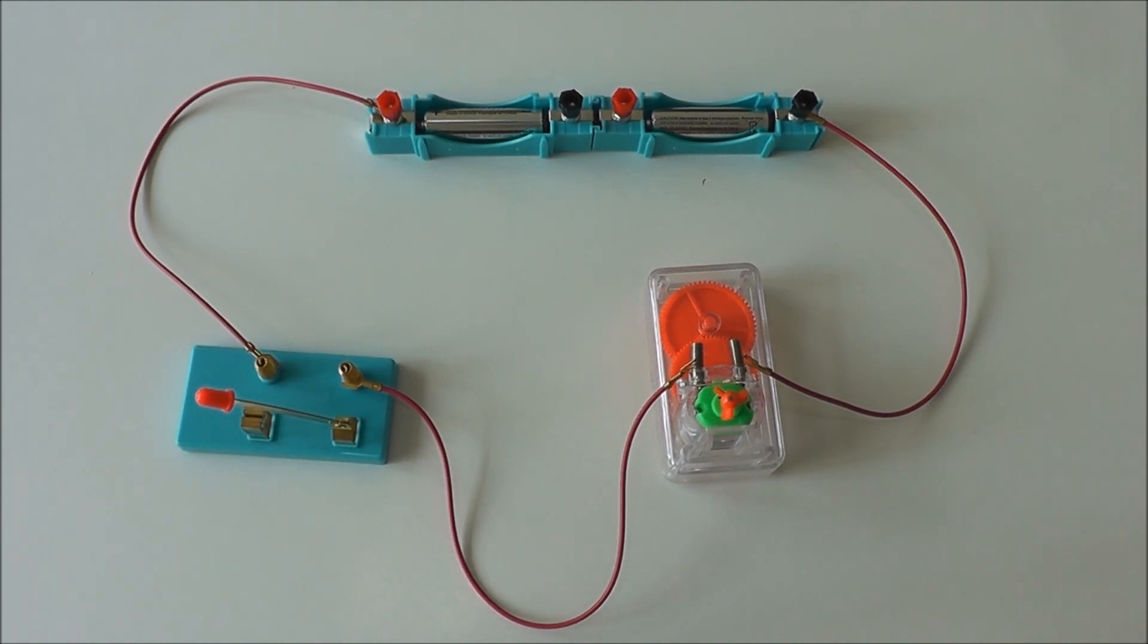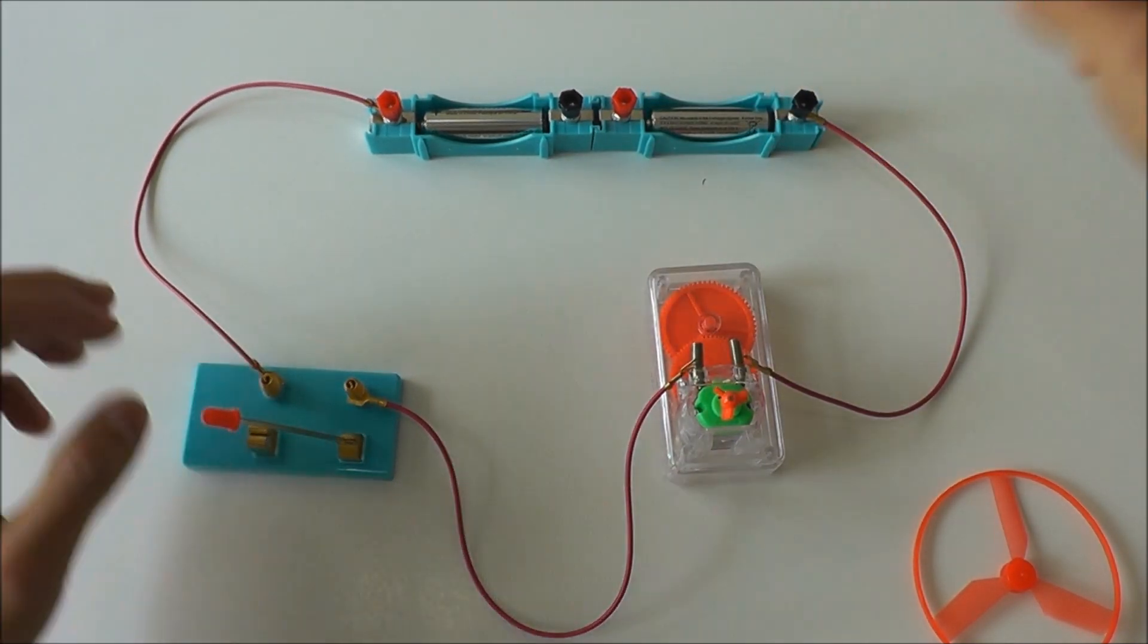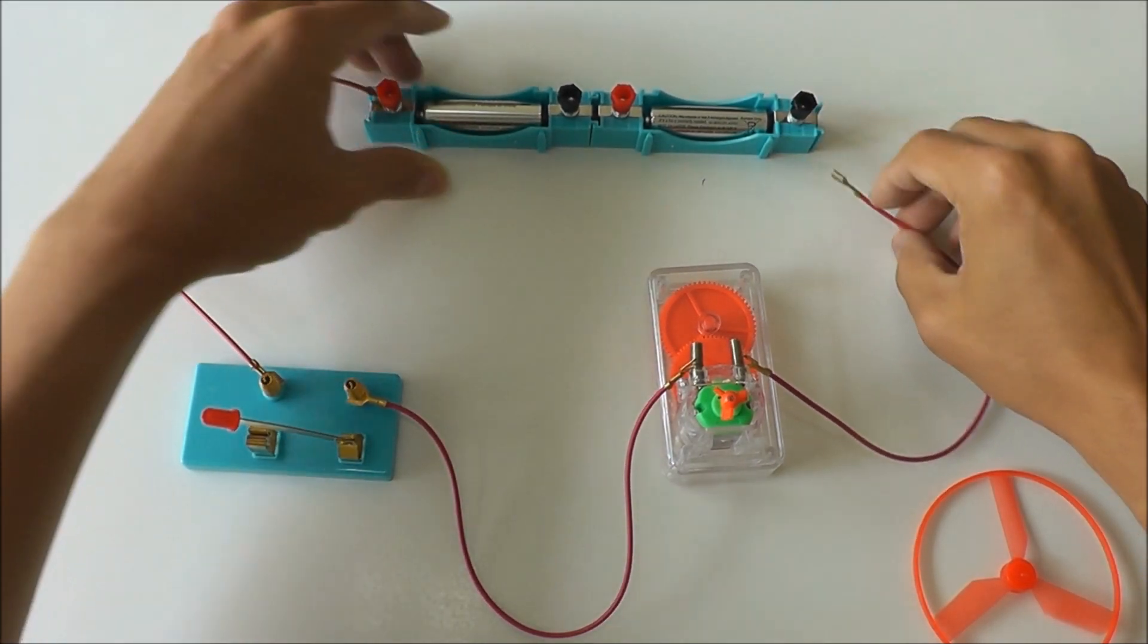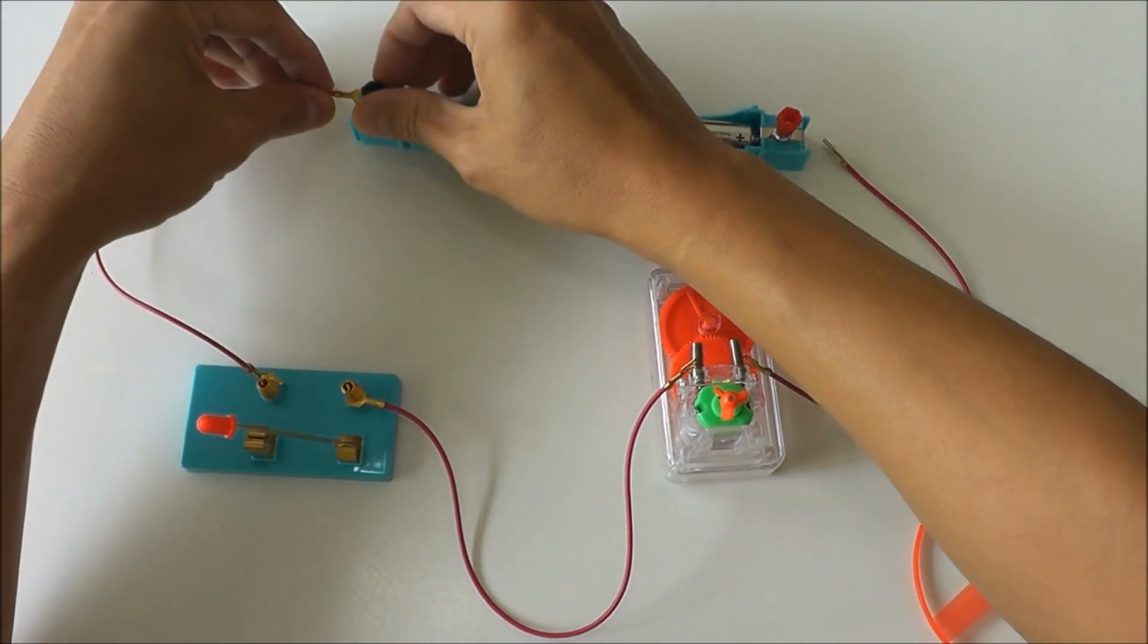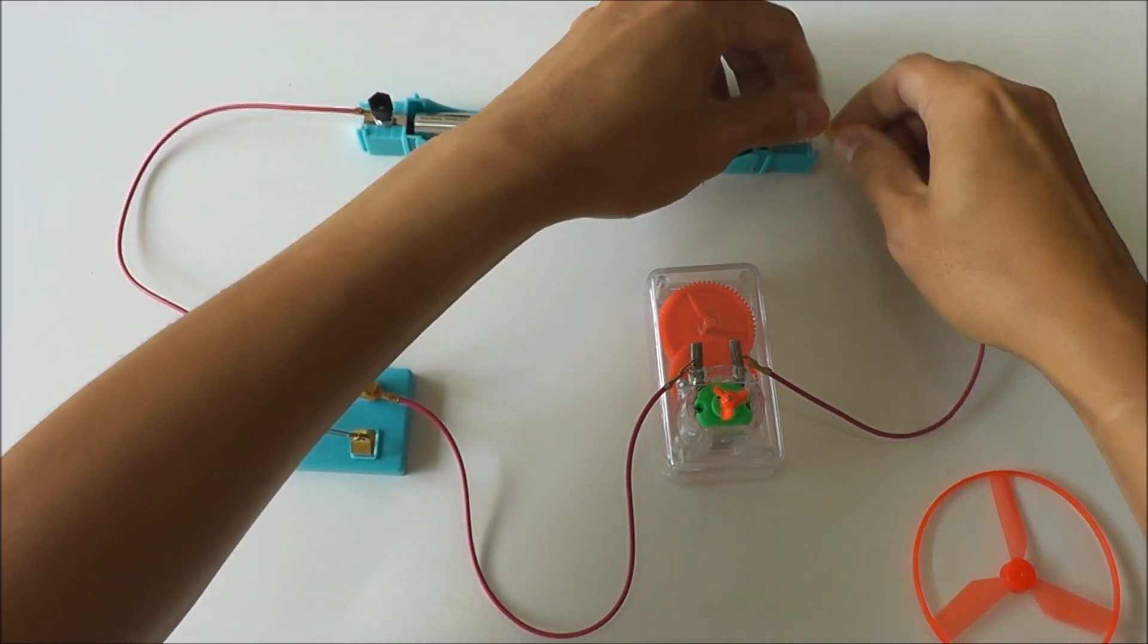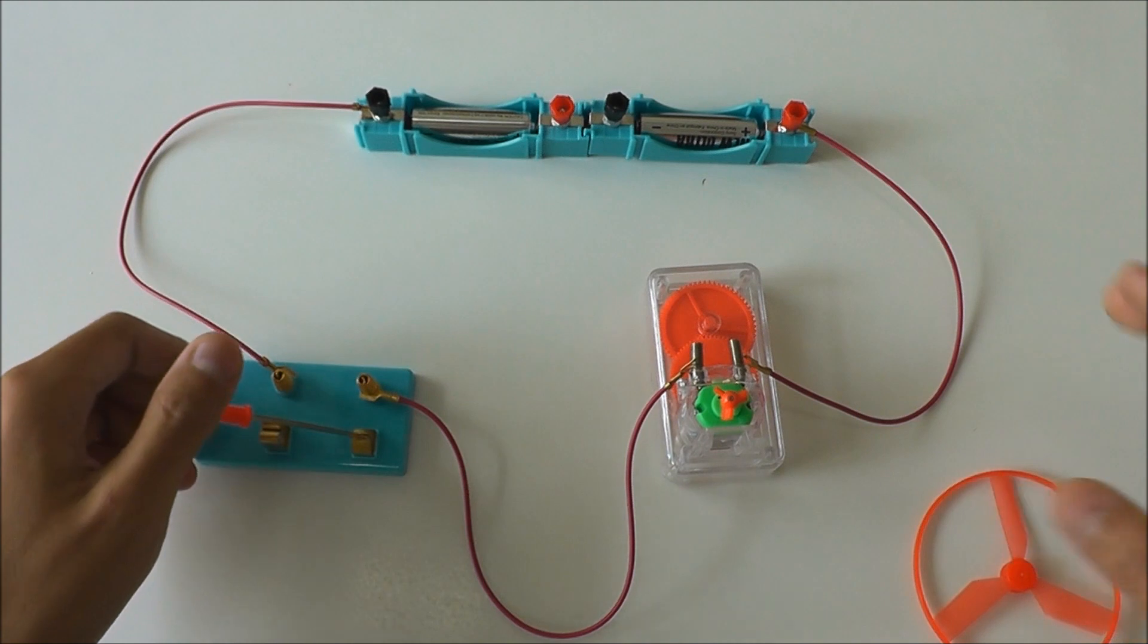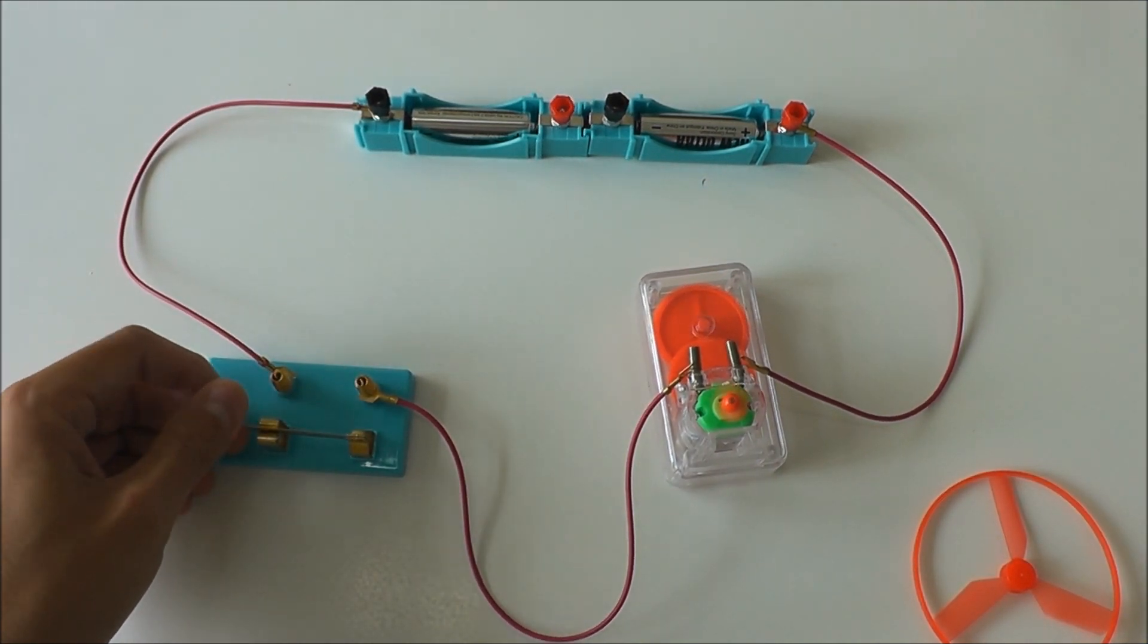I'm going to show you what happens if you do not connect the wires according to what I told you. If, instead of connecting this side to the black knob, you connect it to the red knob, when you close the switch, the motor will still